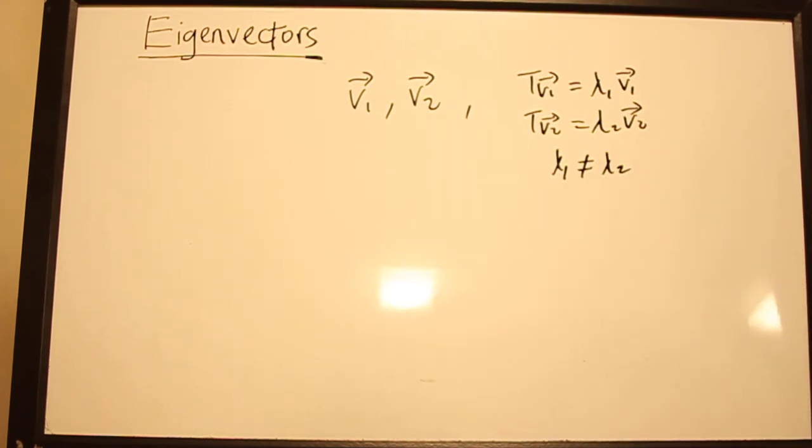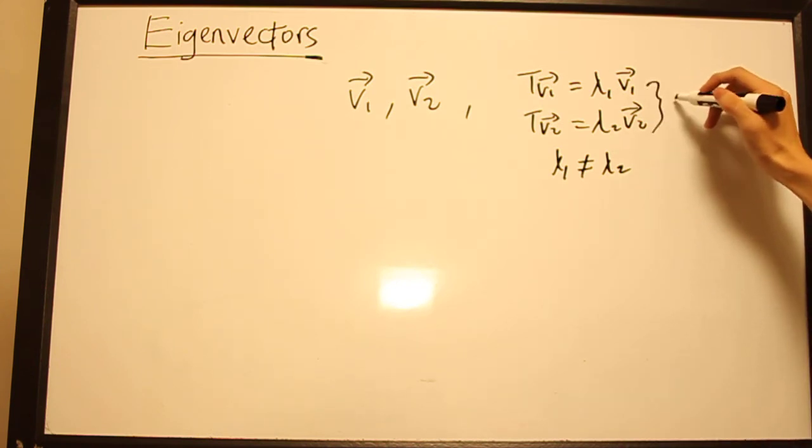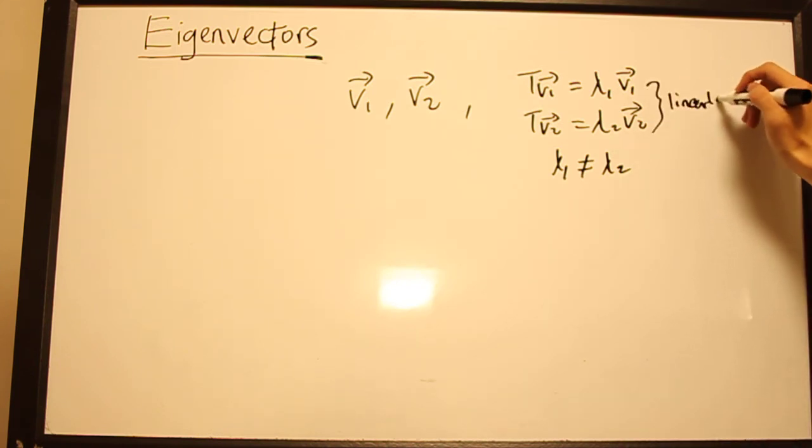then we can say that V₁ and V₂ are linearly independent.